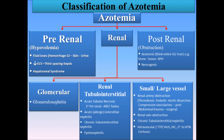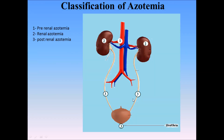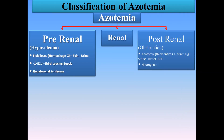Post-renal azotemia requires lack of drainage out of both kidneys. Anything that causes obstruction in the bladder or both ureters leads to post-renal azotemia — for example, stones, strictures, tumors, or obstructions due to neurogenic bladder, which is seen in diabetic neuropathy. All of these are leading causes of post-renal azotemia.